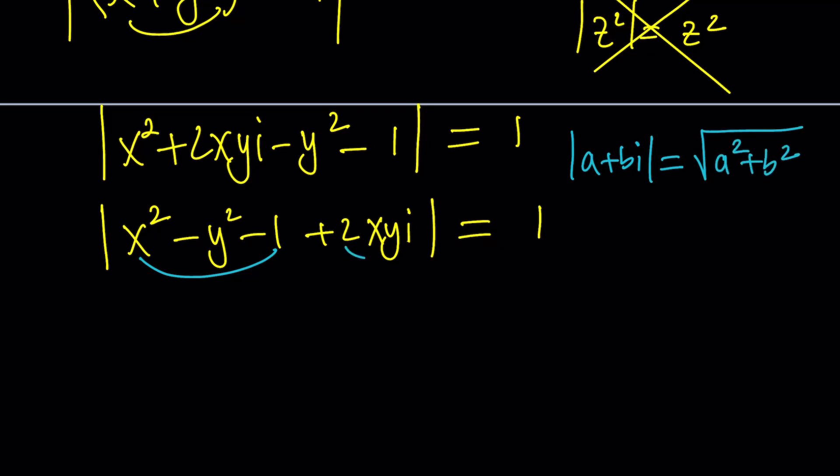And in this case, these are real numbers, real and imaginary parts. So it will be the square root of x squared minus y squared minus one squared plus two x y squared. And that's equal to one. Great.